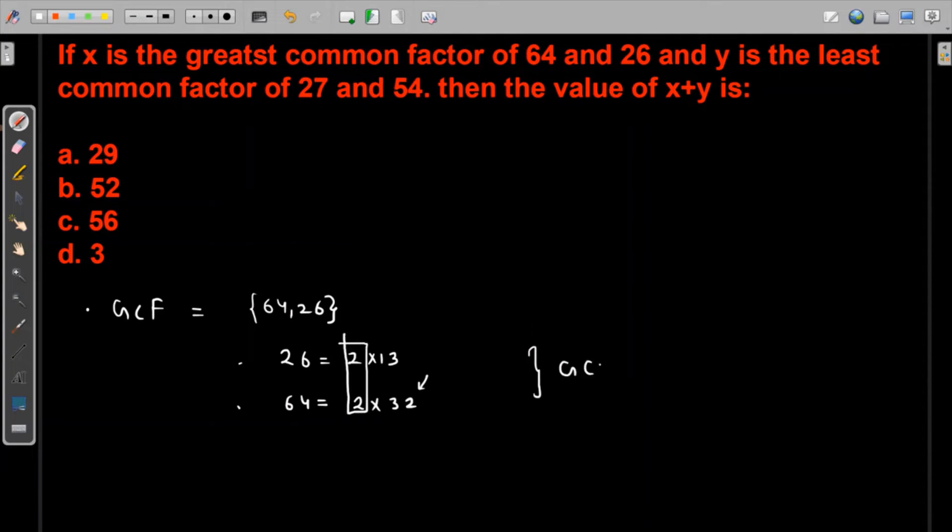And the least common factor, not to be confused with least common multiple, that is of 27 and 54. So for 27 and 54, what is the least common multiple?